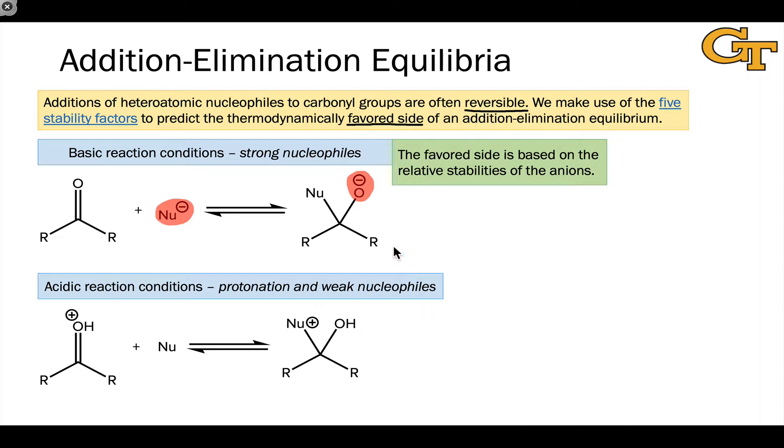Under acidic reaction conditions, the idea is actually similar, except now we're dealing with positively charged species on both sides: the protonated carbonyl compound on the left side, and a tetrahedral intermediate in which the nucleophile is now positively charged on the right-hand side. So under acidic conditions, we want to focus on the stabilities of the ions, but now we're dealing with cations rather than anions.